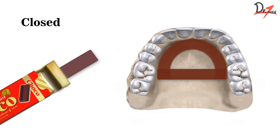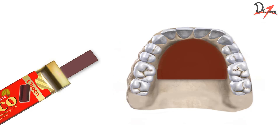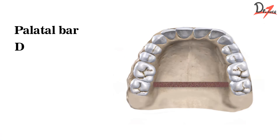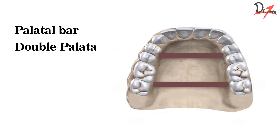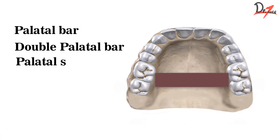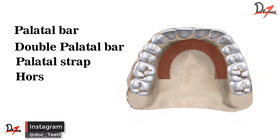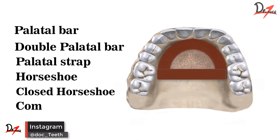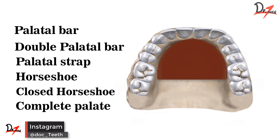Now if I fill the entire area, that will be complete palette. So I have palatal bar, double palatal bar, palatal strap, horseshoe connector, closed horseshoe, complete palette. I hope you found the video helpful.